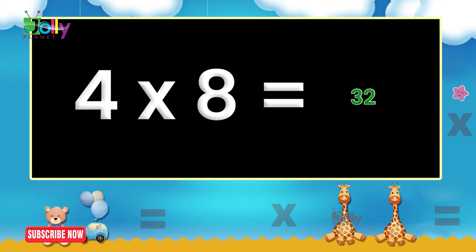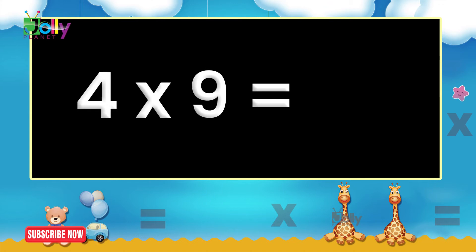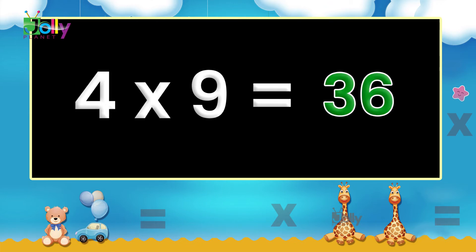Four eights are thirty-two. Four nines are thirty-six.